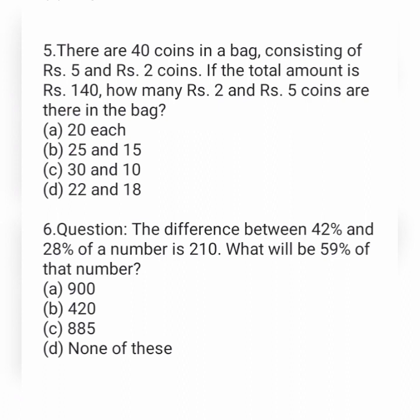Another question: the difference between 42% and 28% of a number is 210. What will be 59% of that number? Option A is 900, option B is 420, option C is 885, and option D is none of these.